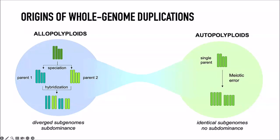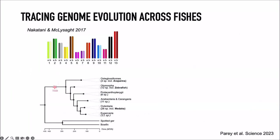Meiosis is significantly simpler in allopolyploids because the chromosome pairs are already somewhat distinct and less likely to form tetravalents, whereas in autopolyploids all four copies can pair in any number of ways. We didn't know which mechanism led to the duplication in fish — it was an open question with evidence for both sides.